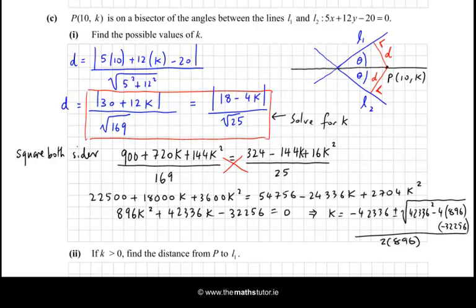So I will just put all that into the calculator and get two values for k. So first of all, I will do the plus, and I get 3/4, which is nice. And now I'll do the minus, so it's -42336 minus the square root of all of that, divided by twice 896. And I get -48, so I get two values, which is what we were asked for. We were asked for the possible values of k.